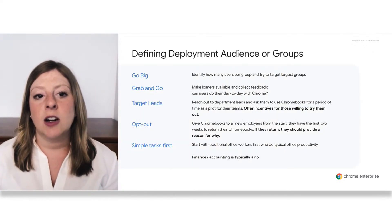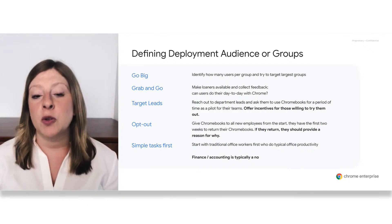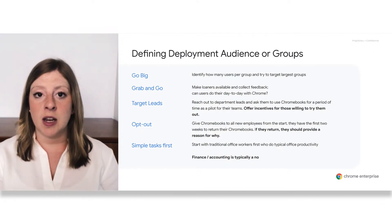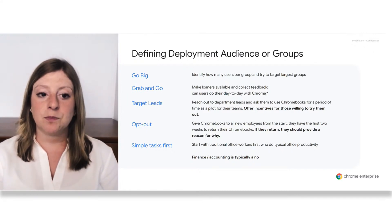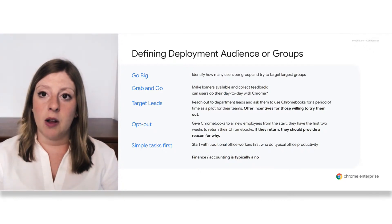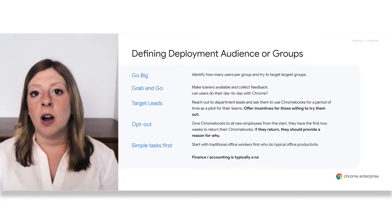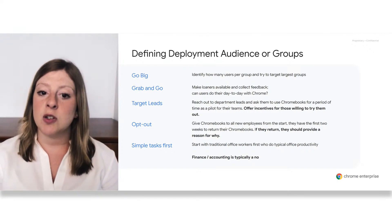As we talk through change management, there are some defining keywords we use during deployment depending on the audience or groups. We use the term 'go big' to identify how many user groups or users per group we're going to be targeting for deployment. It's really important to target large groups so we can get more feedback and more accurate feedback. 'Grab and go' are loaners that are available to collect feedback — a loaner device that employees can grab and log in with their user login, which is a really good way to collect feedback in day-to-day use.